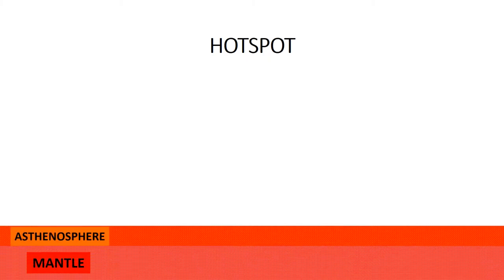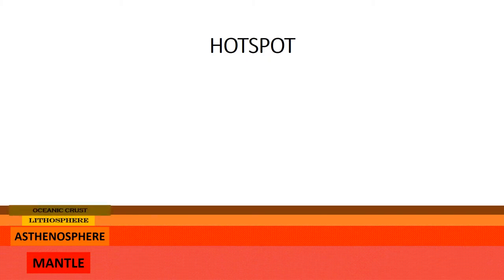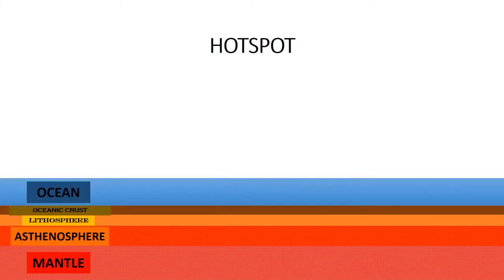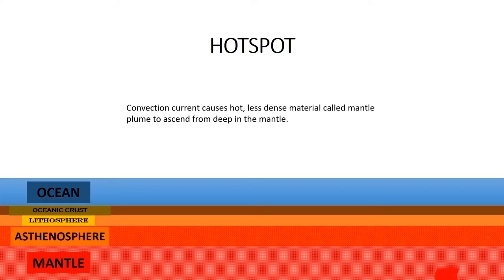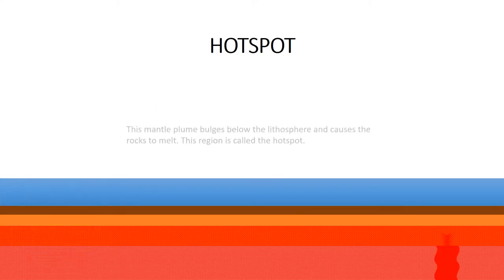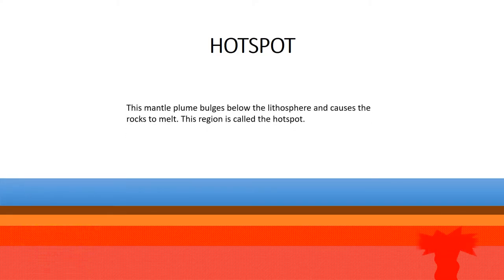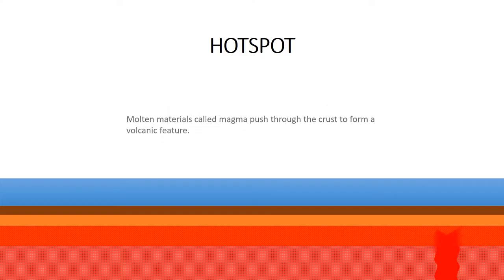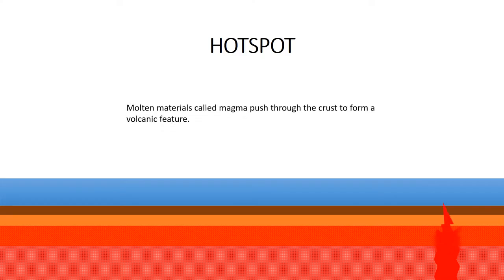Take note of the different layers before we start discussing hot spot. Convection current causes hot, less dense material called mantle plume to ascend from deep in the mantle. This mantle plume bulges below the lithosphere and causes the rocks to melt. This region is called the hot spot, where molten materials called magma push through the crust to form a volcanic feature.